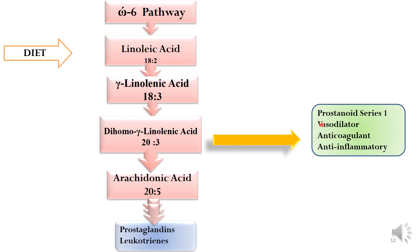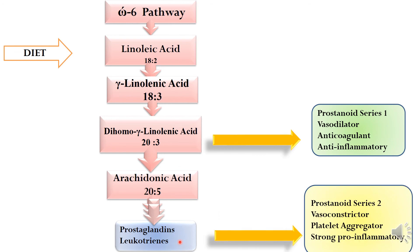On the contrary, the prostaglandins and leukotrienes result in prostanoid series 2, which are vasoconstrictors, platelet aggregators, and strongly pro-inflammatory. So you can see that series 1 and series 2 molecules have opposite functions.